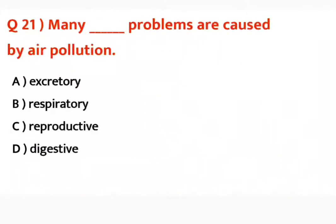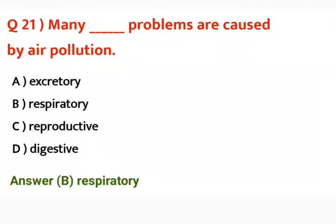Question number twenty-one: Many dash problems are caused by air pollution. Air pollution ki wajah se kounsi mushkilat ka hume saamna karna parta hai? Correct answer is respiratory problems. Many respiratory problems are caused by air pollution.